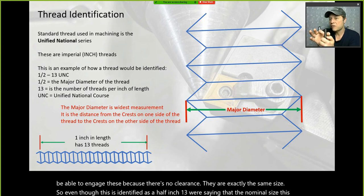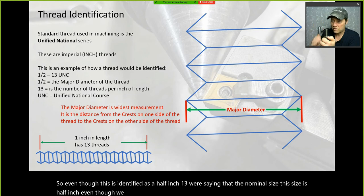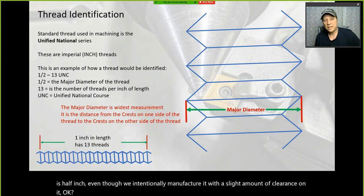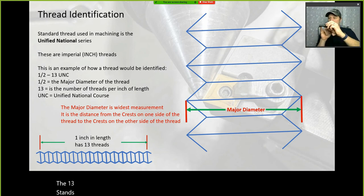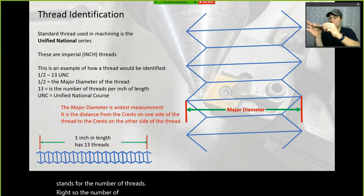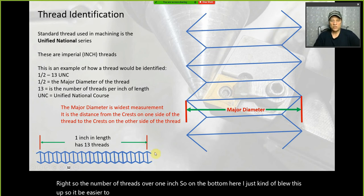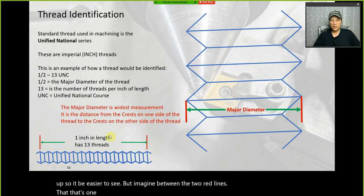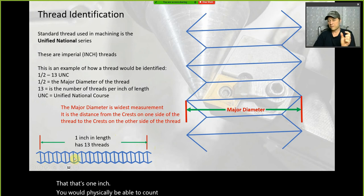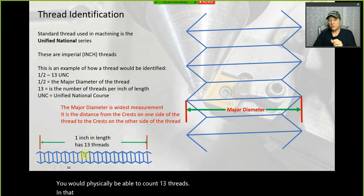Even though this is identified as half-inch 13, we're saying the nominal size is half an inch even though we intentionally manufacture it with a slight amount of clearance. The 13 stands for the number of threads over one inch — between two points one inch apart, you would physically be able to count 13 threads.